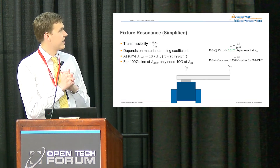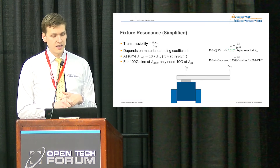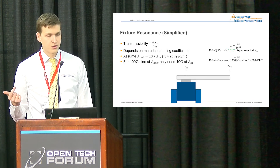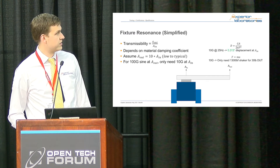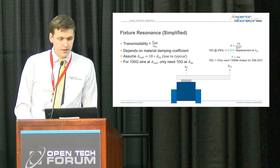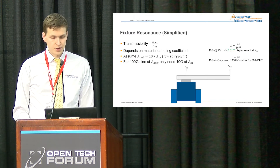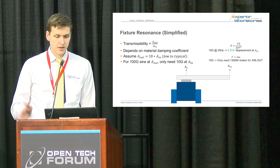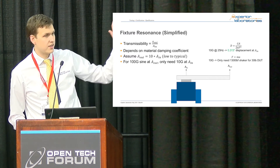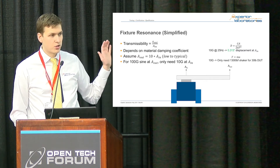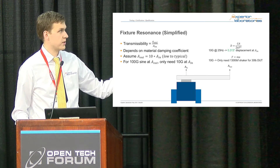Transmissibility is something that's hard to calculate analytically; a lot of the time we do it experimentally. The frequency can be done with FEA or pen-and-paper calculations, but the actual transmissibility depends on how the part is mounted and the material properties. A low value of transmissibility that we've found is about 10 to 1 — you put in 1 G and get 10 Gs at the tip. So for a 100 G sine test, you only need to put in 10 Gs, which means only about a third of an inch displacement — and then you can run it.